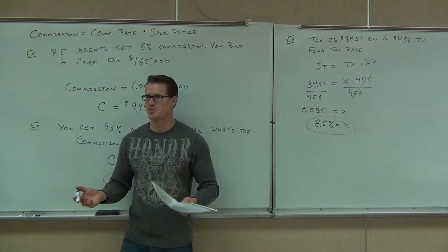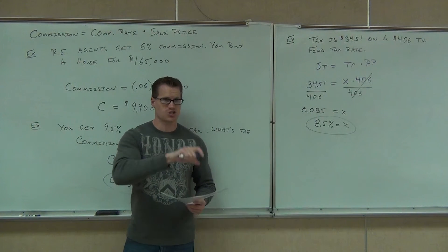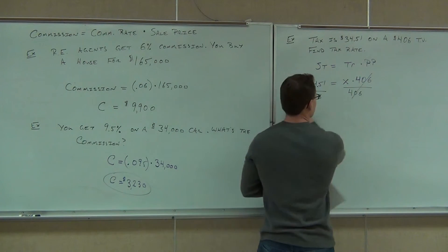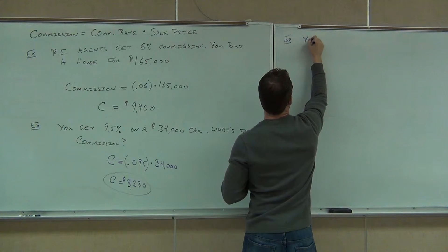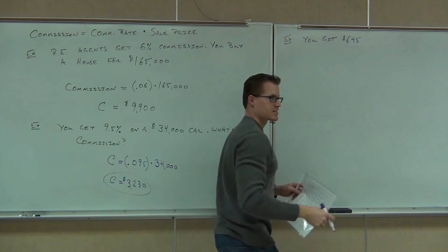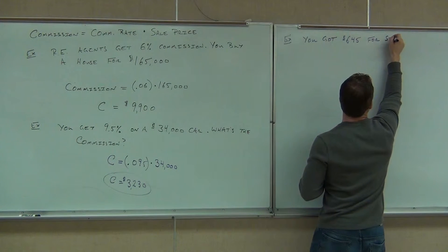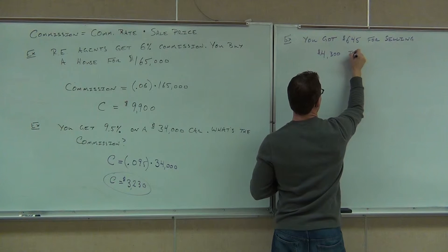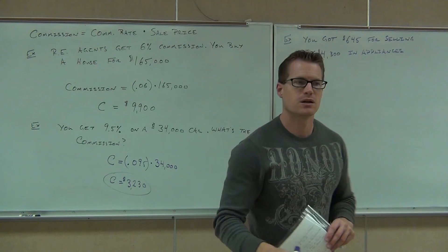Could you figure out the commission rate from that? Well, let's see. I hope so, because that's a question I'm going to ask you in about five seconds. If you sold $4,300 in appliances, and you got $645 as a check from that, find the commission rate. We're going to do that one together. It's going to be very similar to this right here. You got $645 for selling $4,300 in appliances.